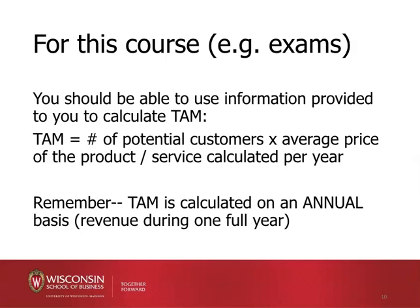So based on the number of potential customers multiplied by, for example, the average price of the product — and make sure that's calculated out per year. Remember, TAM is an annual number. So if customers generally make more than one purchase a year, you need to take that into account. If you have a solid understanding of the hair salon example in this presentation, that should give you a good idea of the type of question you're likely to see on a quiz or exam. Generating a TAM estimate is a pretty important aspect of entrepreneurial activity, and it's something you're likely to use if you ever decide to start your own venture.